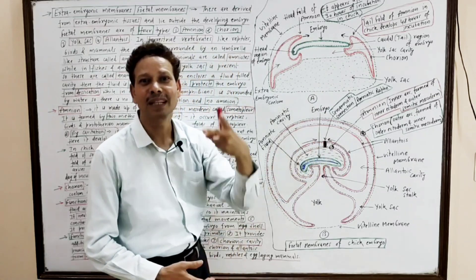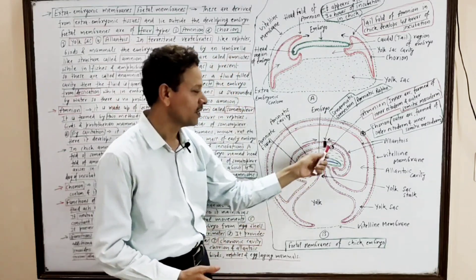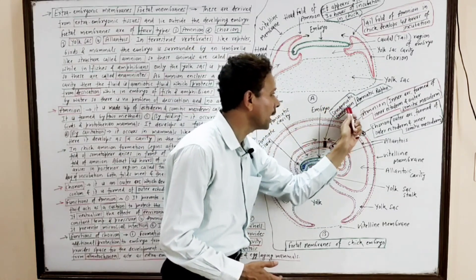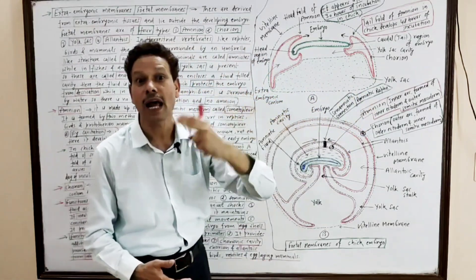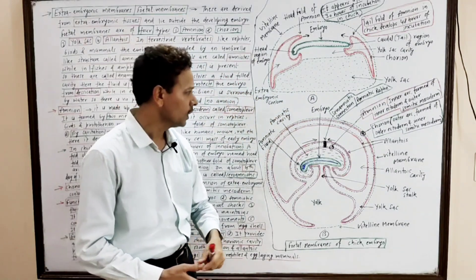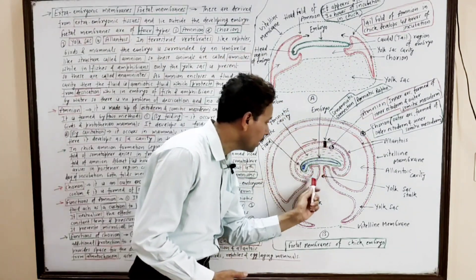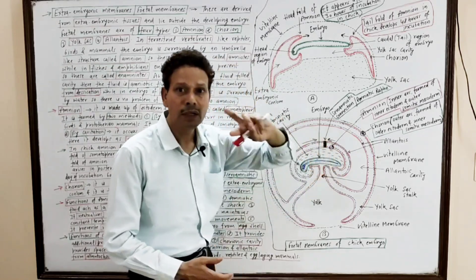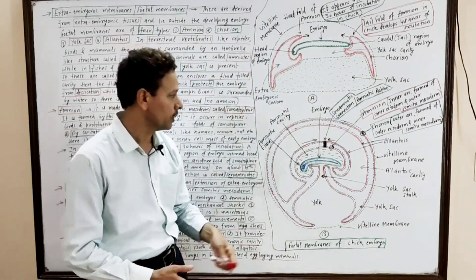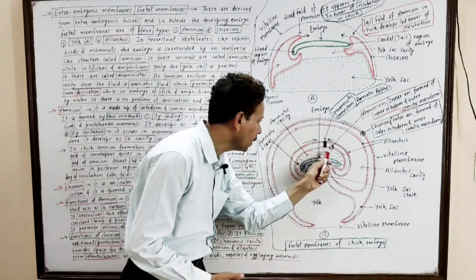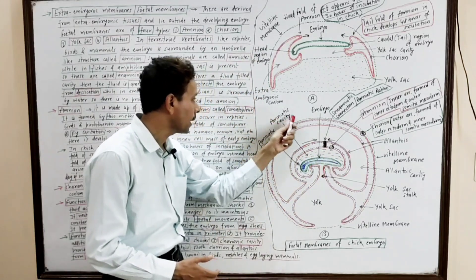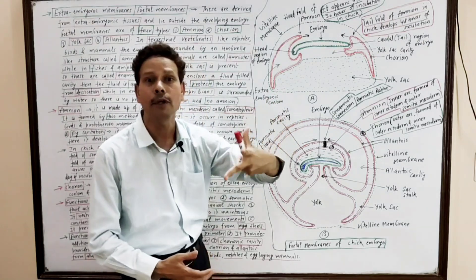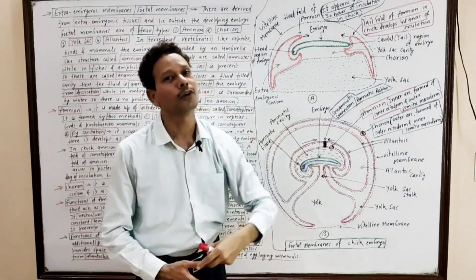Both folds — the head fold and the caudal fold — meet in the middle part on about the fourth day of incubation. The junction at which both folds meet is called the amniotic connection, or amniotic raphe. The amnion surrounds the embryo like an umbrella-shaped structure and encloses a cavity called the amniotic cavity.